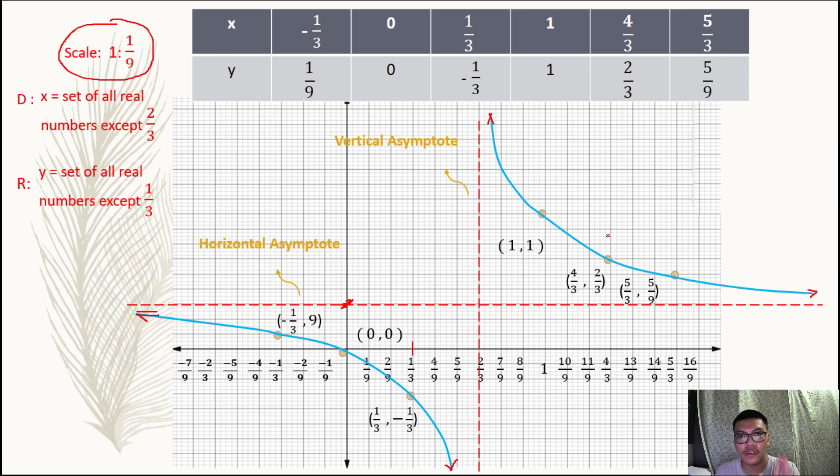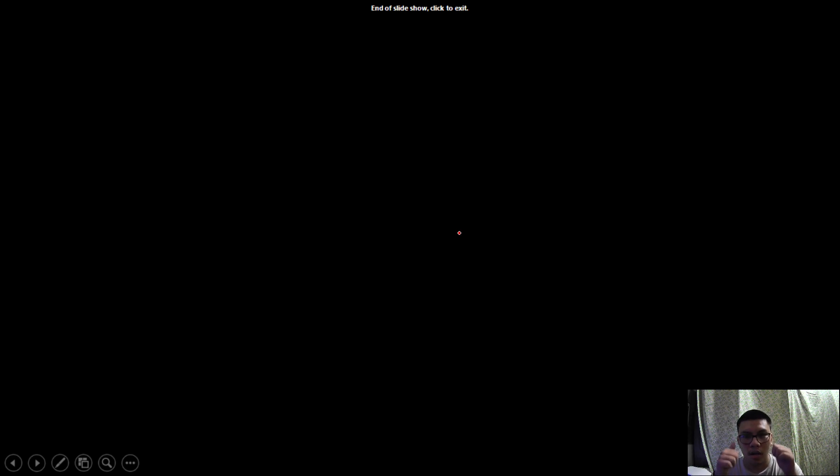So this is now our graph. Remember to add arrows there as an indication that our graph extends up to infinity, but never touches the vertical or horizontal asymptote. This graph is the graph of y is equal to x all over 3x minus 2.